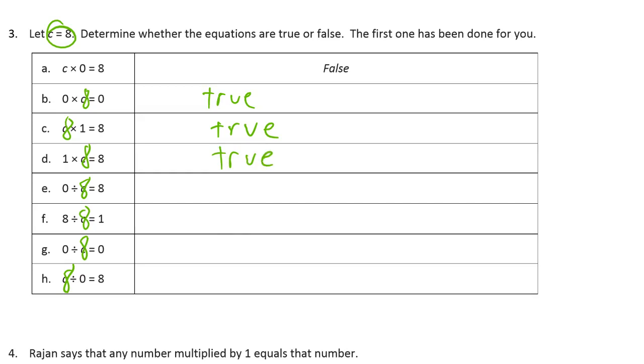0 divided by 8 equals 8. So 0 divided by anything has to be 0. So we would need 64 divided by 8 to equal 8. So this would have to be 0. So it has to be false.